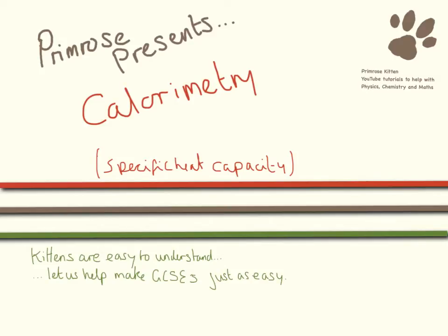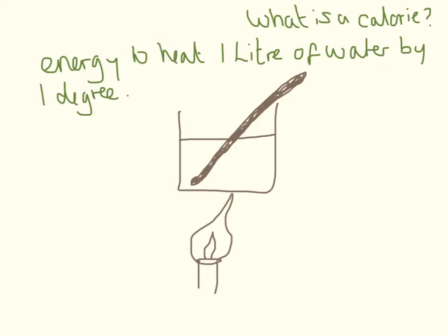This video is about calorimetry. You may recognize this because it's also known as specific heat capacity, but that comes up in physics. A calorie, where the name calorimetry comes from, is the energy required to heat one litre of water by one degree. Calorimetry, or measuring energy transfer — in this video we're just talking about heating water.